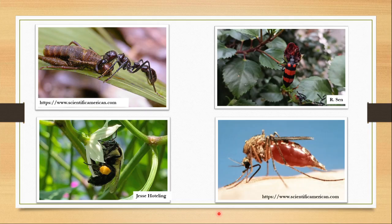You might have noticed that different insects have very specific food habits. Some insects like to feed on solid food, some like a liquid diet. The food can come either from an animal source or from a plant source. Depending on what kind of food they require and what is available in their environment, different insects specialize in feeding on different kinds of food. To acquire this special food, they also have special types of mouthparts.